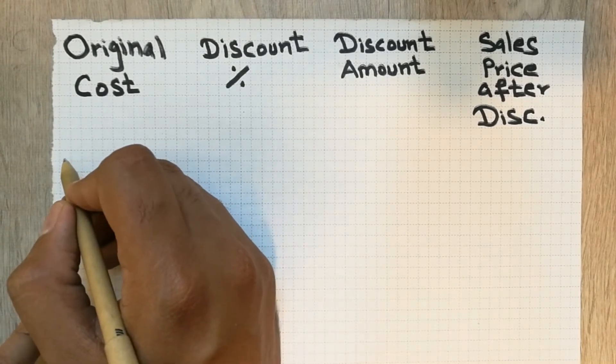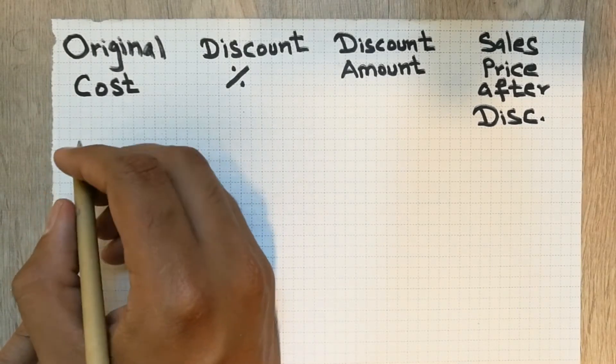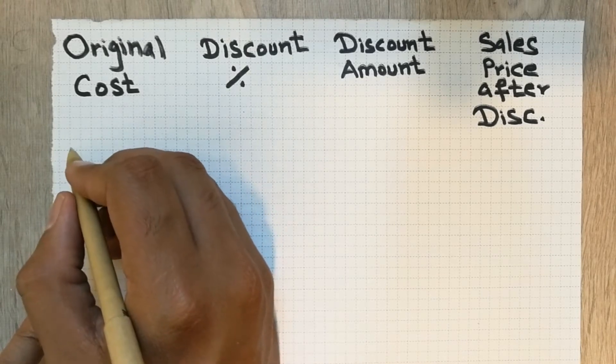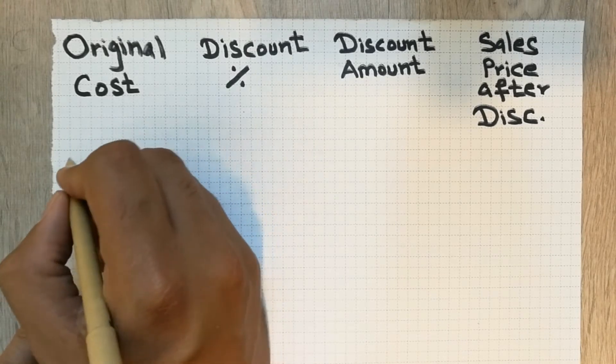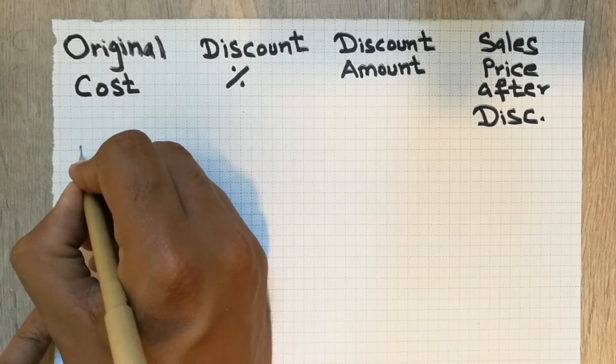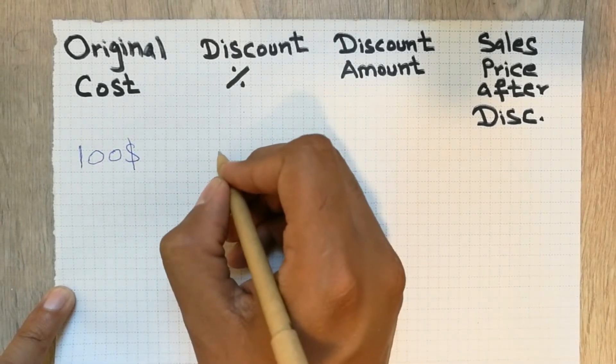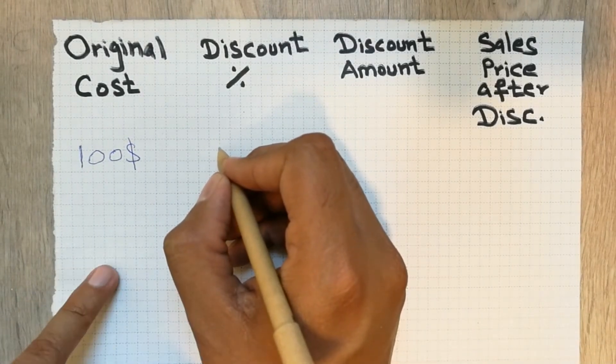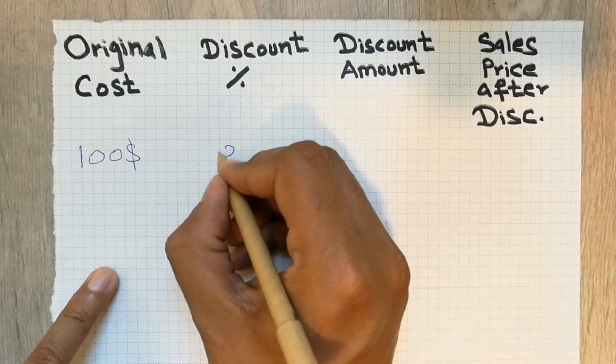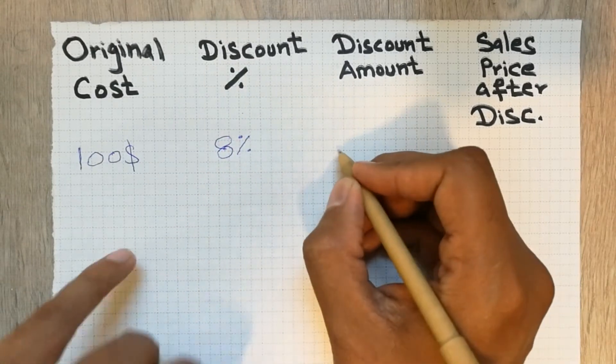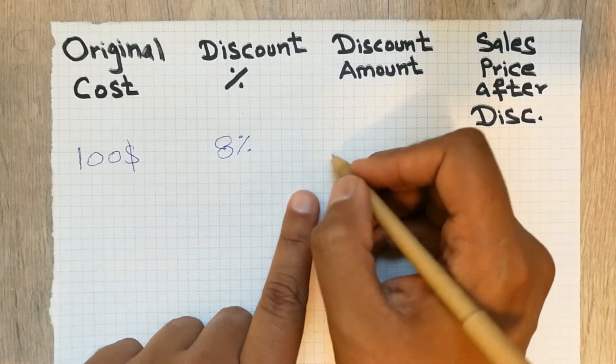For example, you go to a shop and you like a product or any item. The shopkeeper says the original cost of the product is $100, or 100 rupees, whatever currency you like. And he says the discount on that product is 8%.